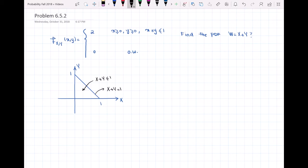In order to find the PDF of W, where W equals X plus Y, I can write either Y equal to W minus X, or X equal to W minus Y. It doesn't matter which one I choose, so I'm going to choose Y equal to W minus X.